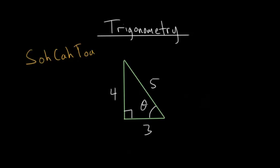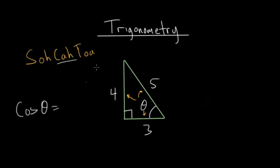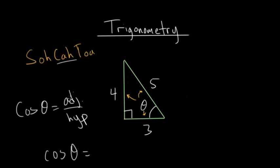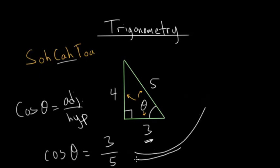We want to find this angle, and in this case we actually have all three side lengths. So we know what the opposite side of the angle is, we know what the adjacent side is, and we also know the hypotenuse. So we can use any of these trig functions, and for no particular reason I'm going to use the cosine. The cosine of the angle is equal to the adjacent side divided by the hypotenuse. So the cosine of the angle equals the adjacent — that's the side next to the angle, which is 3 — divided by the hypotenuse, which is always the long side, so dividing by 5. And so we have our trig ratio set up.